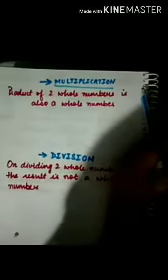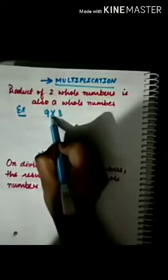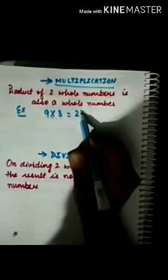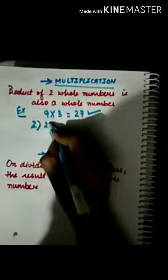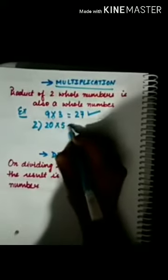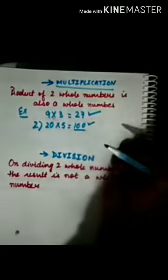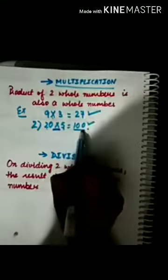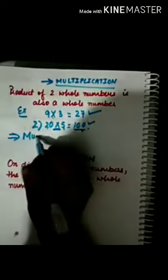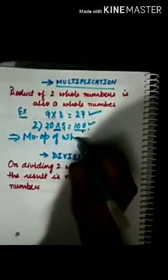Now let's move on to multiplication. The product of two whole numbers is also a whole number. For example, 9 multiplied by 3 equals 27, which is a whole number. Another example: 20 multiplied by 5 equals 100, which is again a whole number. So whenever we multiply any two whole numbers, the result is again a whole number. That means the multiplication operation of whole numbers is closed.